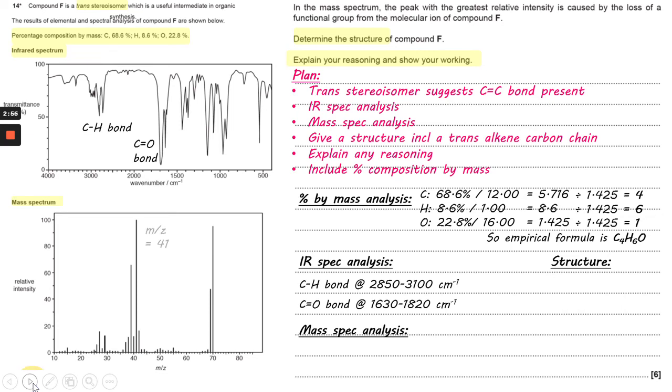Now we can move on to the mass spectrum. We've got the base peak at m/z = 41 and the M+ peak at m/z = 70. We know that the empirical formula is C₄H₆O, so I've put in there C₄H₆O+. To check this, I'm going to add up the mass of the empirical formula.